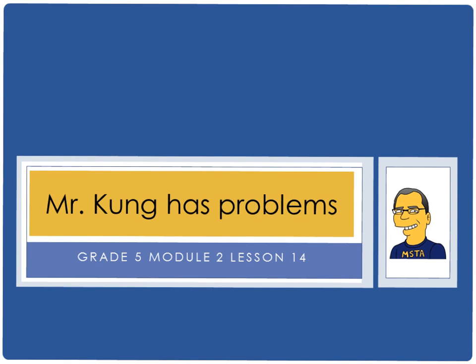Hello, and welcome to another episode of Mr. Kung Has Problems. Tonight, we are working in grade 5 on module 2, lesson number 14, and we are using fractional and decimal multiplication to express equivalent measurements. This is very much like what we were doing yesterday. The only difference is the direction of the size of the units, which you'll see what I mean in just a second. Let's take a look at two problems from tonight's homework.